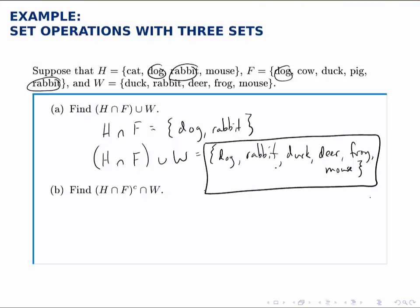For part B, we already found H intersect F. Now we want the complement of that intersected with W. Notice that we weren't given a universal set, so we can't directly calculate the complement of this set.